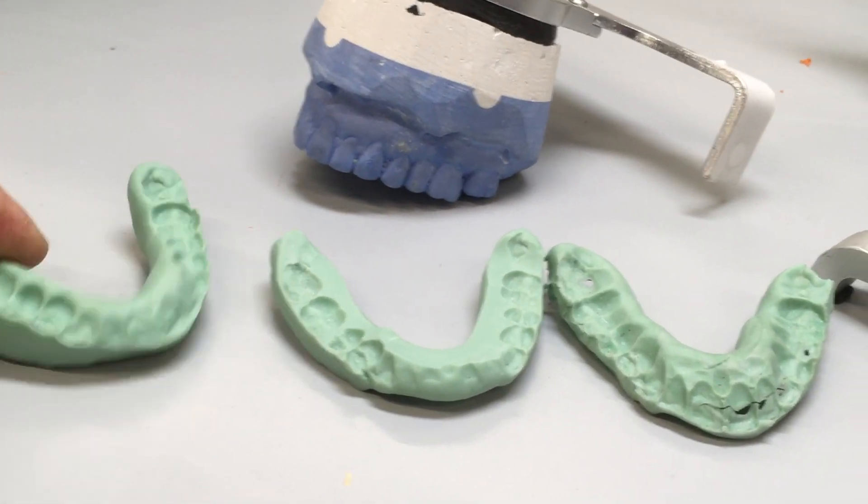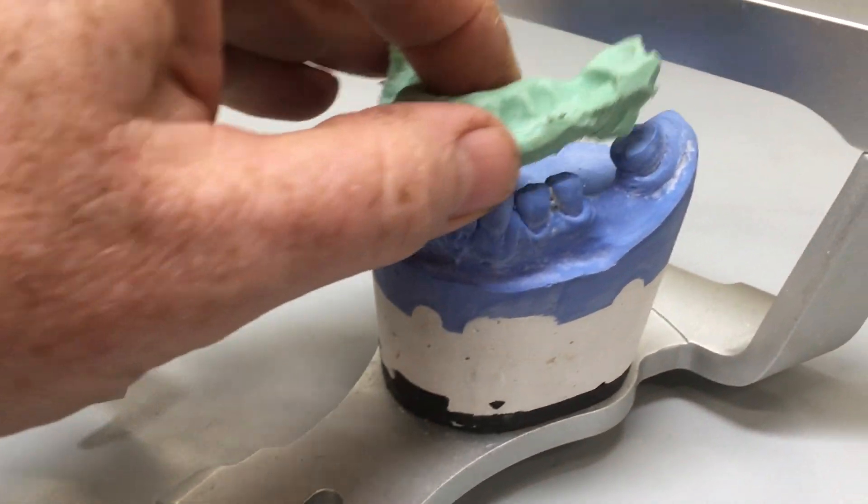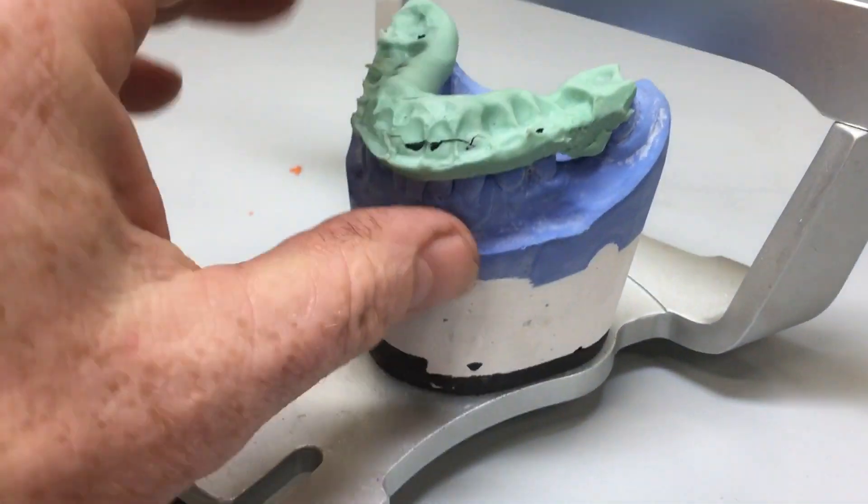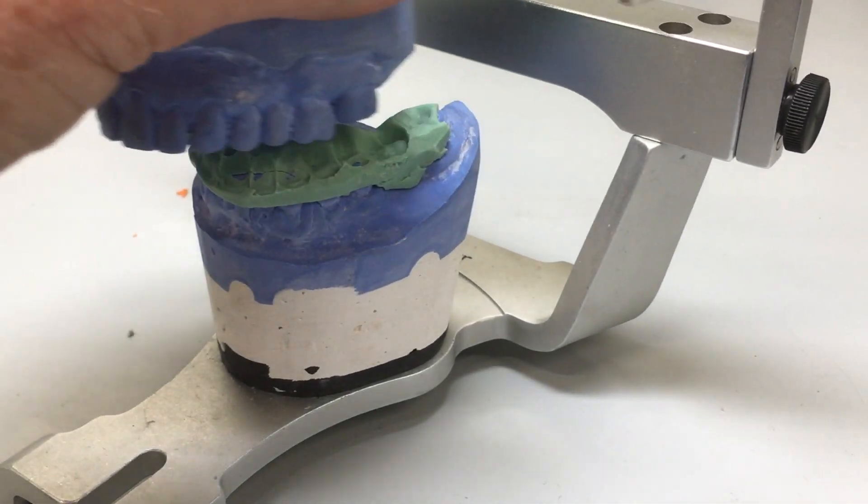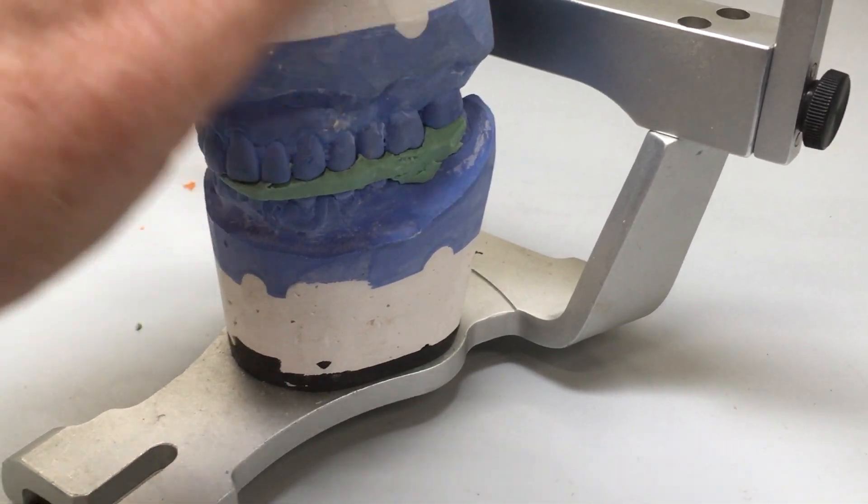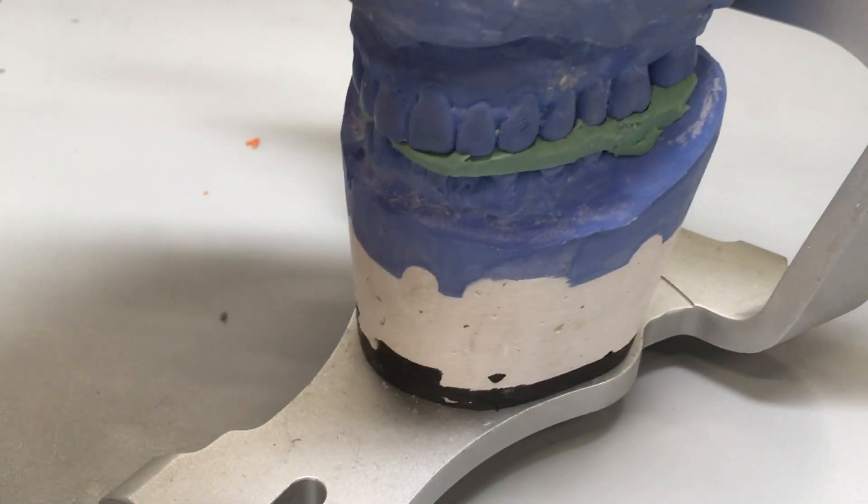The first one here is very thin and you can actually see the RCP contacts through the registration. We can pop that into place. We do this with a set amount of models, so we use one CR record to mount the models on a regular articulator.